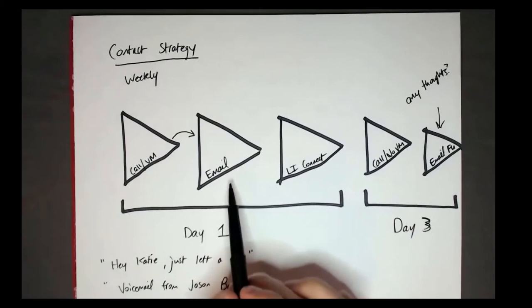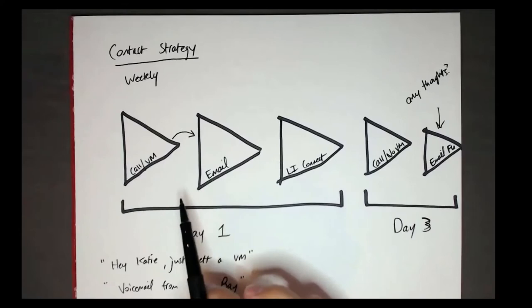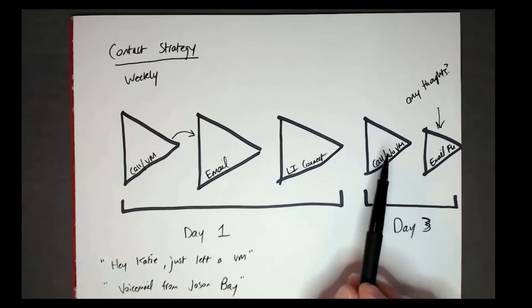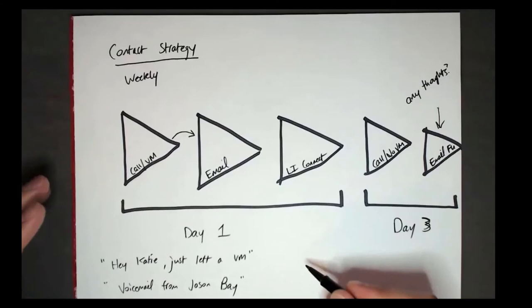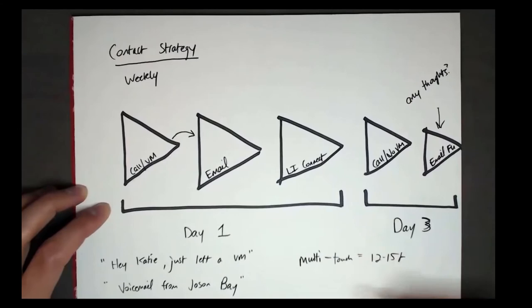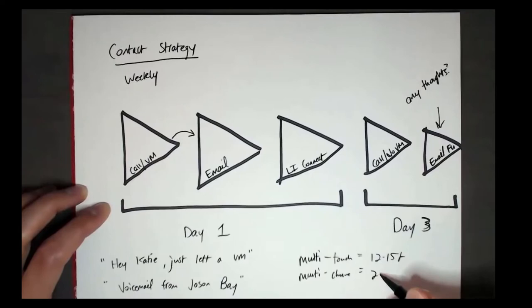The 'Any thoughts?' email just says 'Any thoughts? — Jason.' That's it — on the same email chain, as a reply-all, which you can automate with a sales engagement tool like Outreach, SalesLoft, Apollo, Vanillasoft, or any of the many platforms out there. That's the weekly touch pattern — run it three weeks in a row and you'll have 15 touches. To boost contact rates: you want multi-touch — at least 12 to 15 touches — multi-channel (two to three channels), spread out over 30 to 45 days.